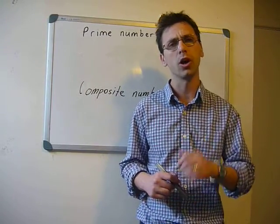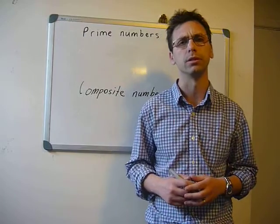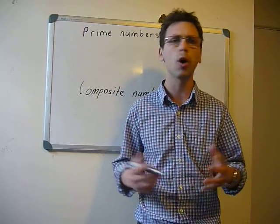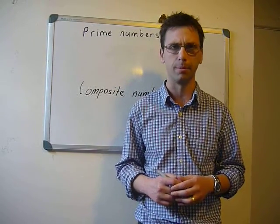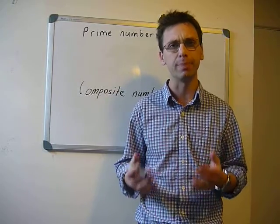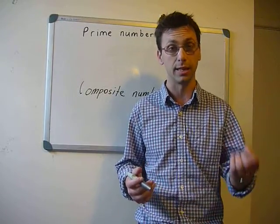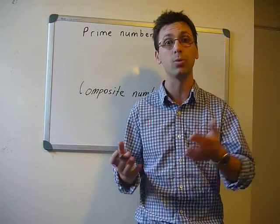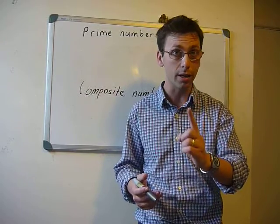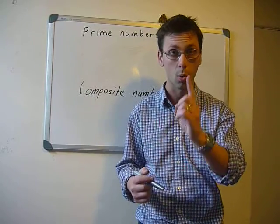So let's go through the numbers. One cannot be a prime number because you have to be divisible by itself and one, but the number one is only one.